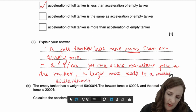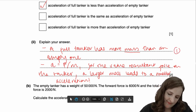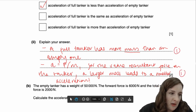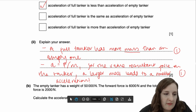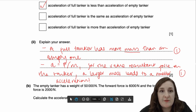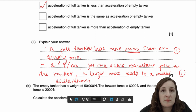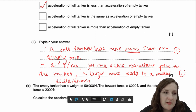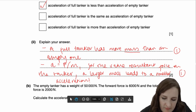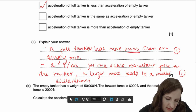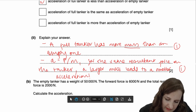You're getting one mark for the first bullet point for referring to mass. Then you're getting one mark for referring to the fact that you know you've got the same resultant force, and you know acceleration is the resultant force per mass, and therefore you'll have a smaller acceleration. So those are your two points.